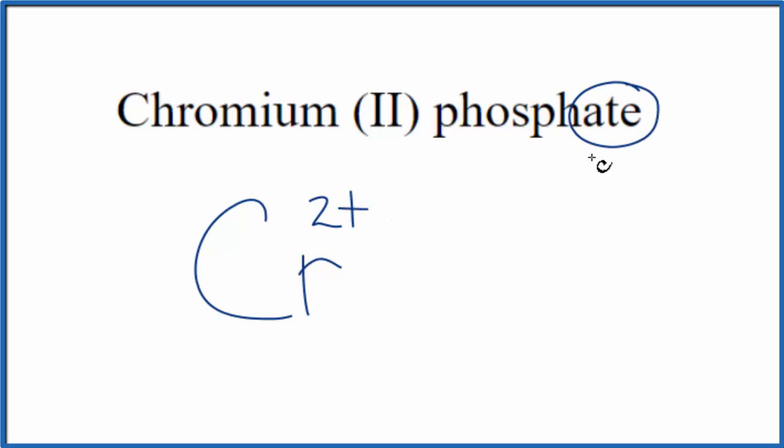You're not going to find this on the periodic table. This is a polyatomic ion. You either memorize that the phosphate ion, that's PO4 3-, or, if you're allowed, you look it up on a table of polyatomic ions.